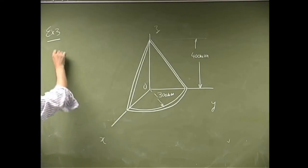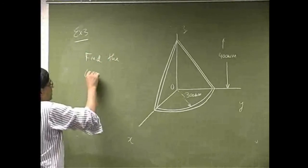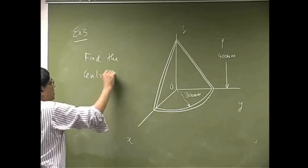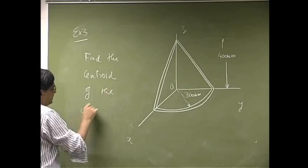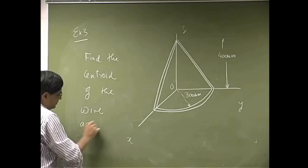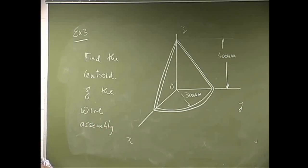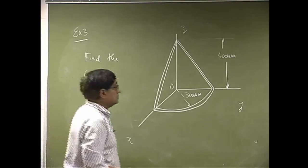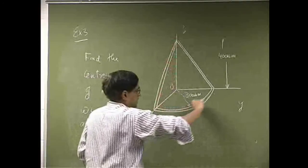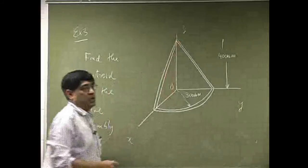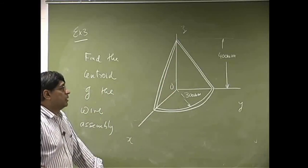The question here again will be to find the centroid of the wire assembly. You have a component which is formed by a wire that goes here, goes around like a circle, then goes up, and it closes at the same point.